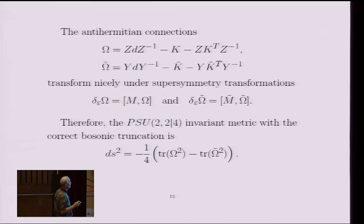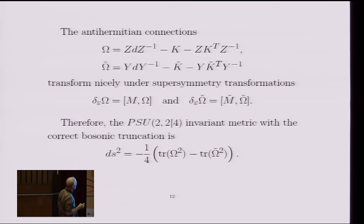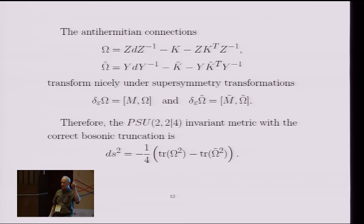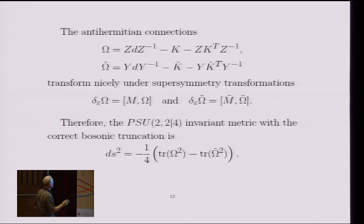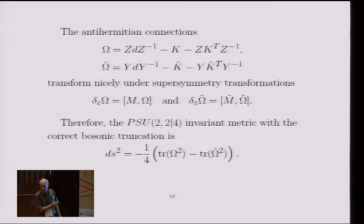And then we can define some connections, which now do involve the bosonic coordinates as well as the fermionic coordinates. So this K and K tilde, which appear in this formula, were the diagonal blocks of that matrix gamma inverse D gamma. And now we're combining them with these bosonic matrices, Z and Y, that I just defined in this way.